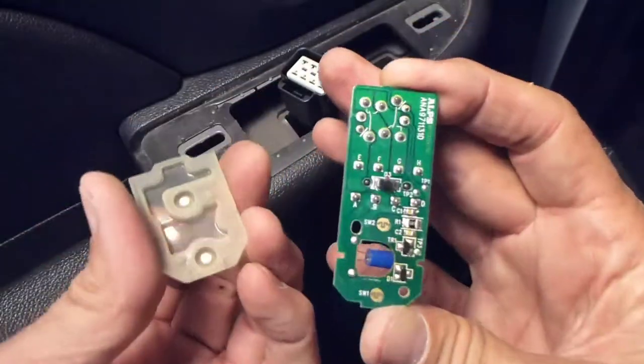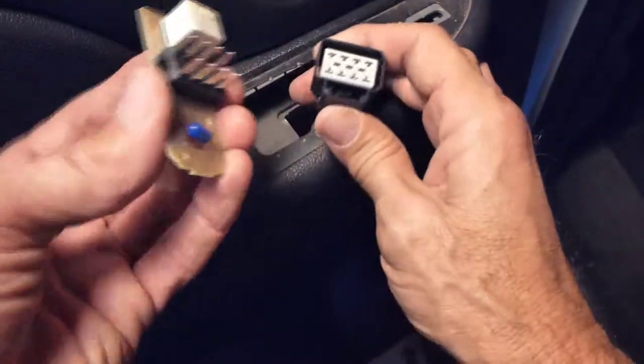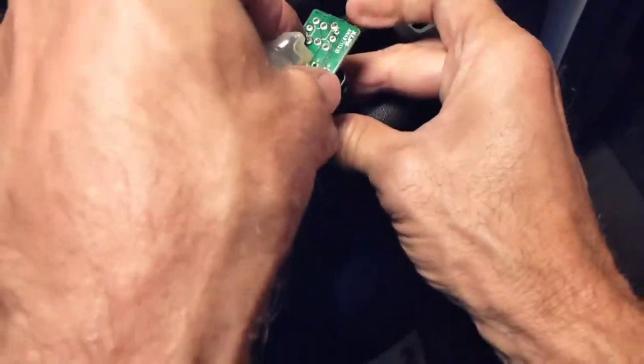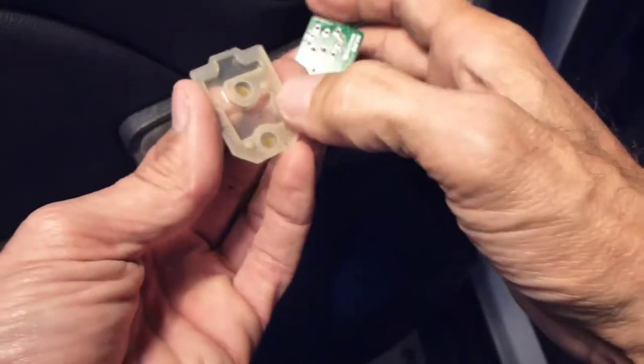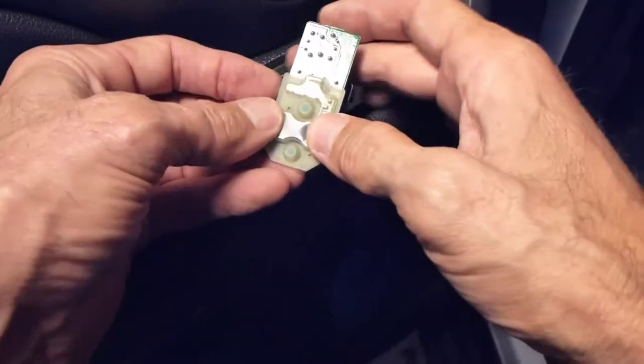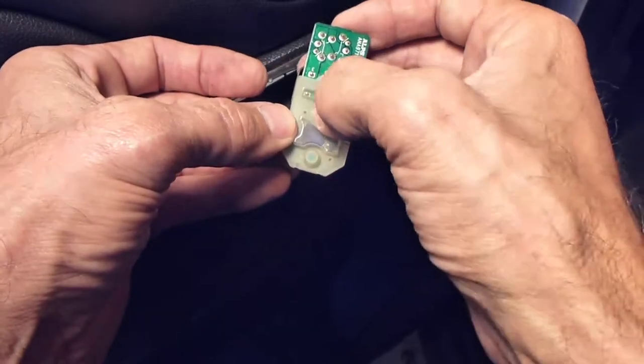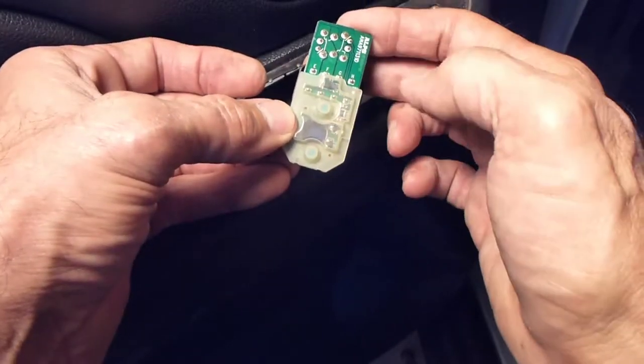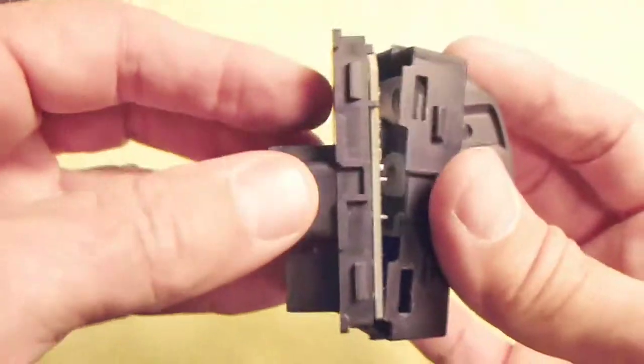And now, before we put it together, I'm just going to do a quick test here. I don't want to put everything together unless I know it's working. So we're going to go ahead and put those contacts right on the circuit board. And this is how it works when you're pushing that switch button. It's just engaging these. And it looks like we have good function. So we can go ahead and put the switch back together.